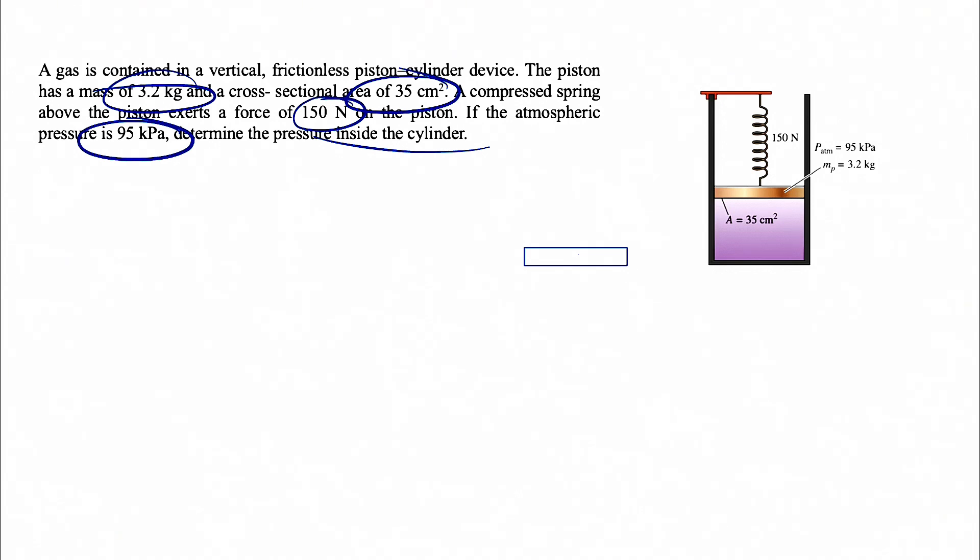First of all, we have the weight of this piston which we know is 3.2 kg. But as we covered in the previous videos in engineering mechanics and mechanics of materials, we care about the force in our free body diagram. So our force in here would be the weight of this piston, which would be mass times acceleration of gravity, which on earth our g would be 9.81 m/s².